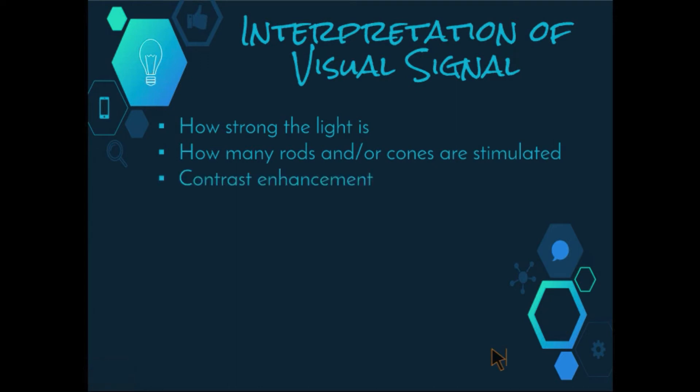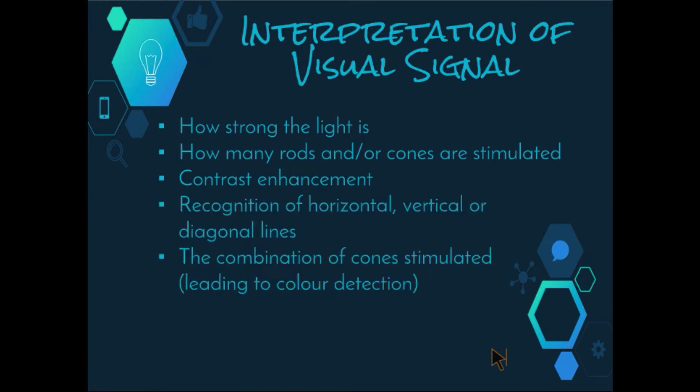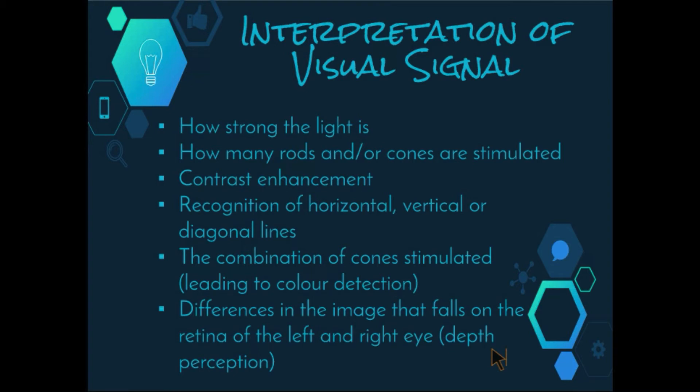Contrast enhancement, so being able to detect shadows. Recognition of horizontal, vertical and diagonal lines. The combination of cones stimulated leading to color detection. And the differences in the image that falls on the retina of the left and the right eye, which goes back to depth perception that we looked at earlier.